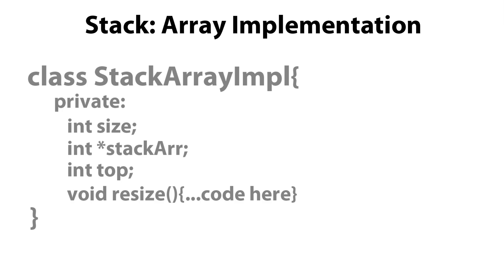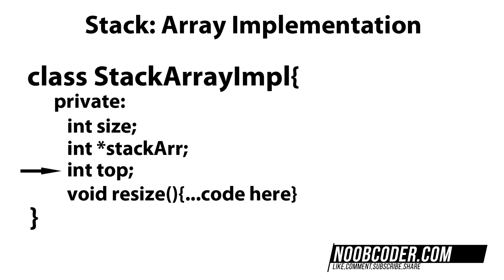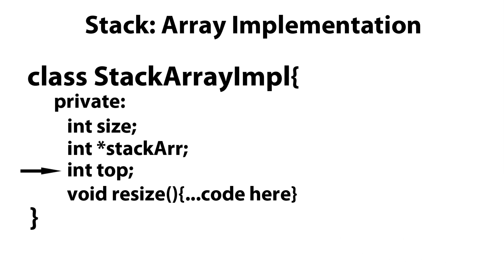To get started, we're going to create a class called stack array implementation, and it's going to contain a couple of private data members. The first one, 'size', is going to be the size of the array. 'Stack array' is going to be the actual array. And 'top' is going to be the index of the top of the stack. We're also going to have a method called resize, and this is just in case our stack becomes full — if our stack becomes full, we're going to have to resize the array.